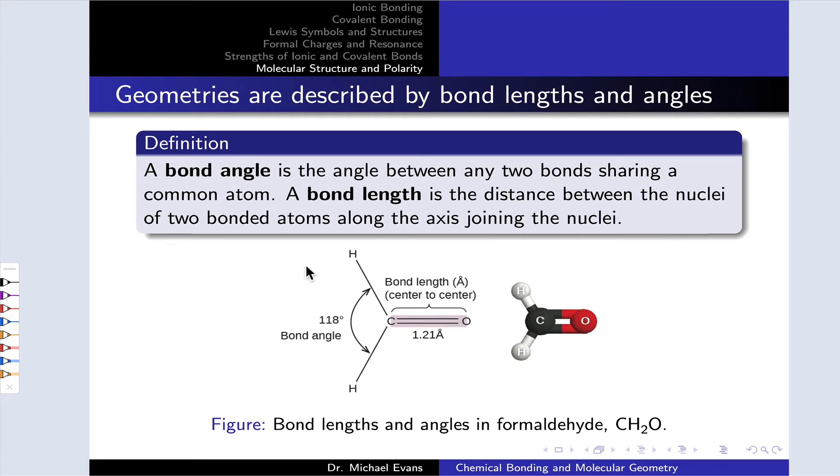First, let's start with some key terminology associated with molecular geometries in three dimensions. A bond angle is the angle between two bonds. Looking at two bonds sharing a common atom, we can define the angle between them as the angle between these two CH lines right here. For example, in formaldehyde, the HCH bond angle is 118 degrees.